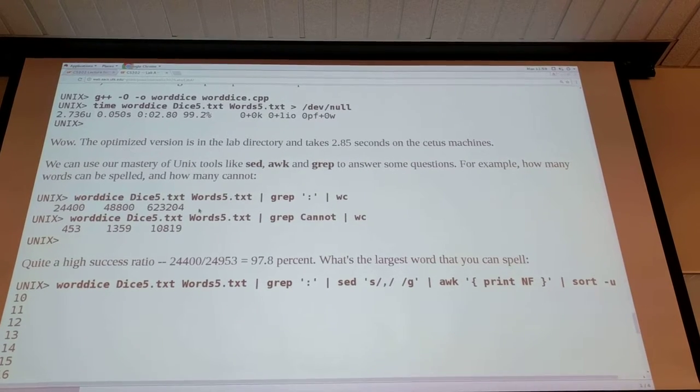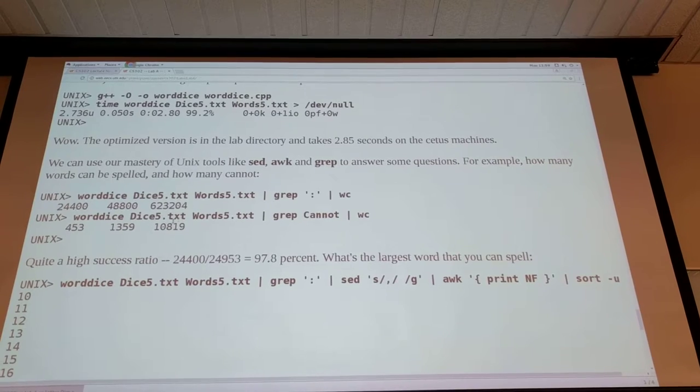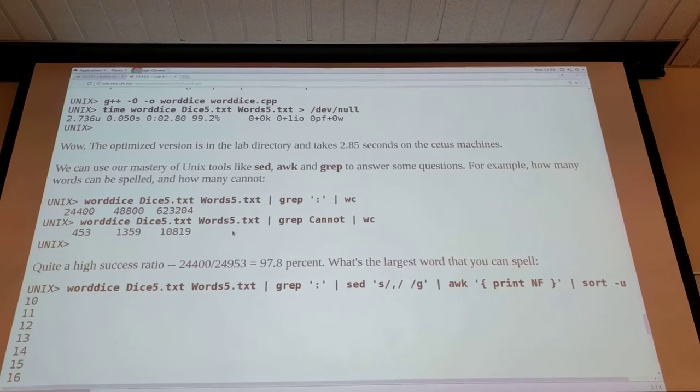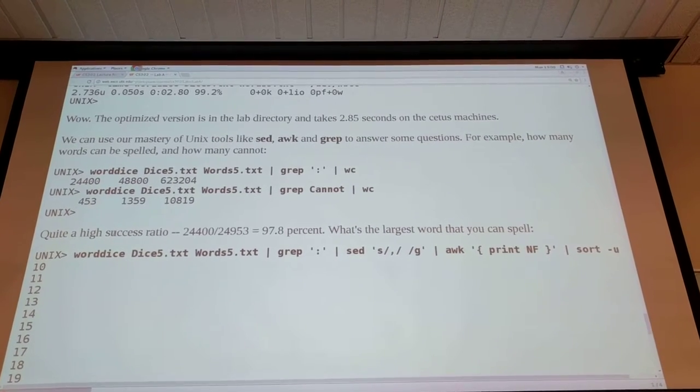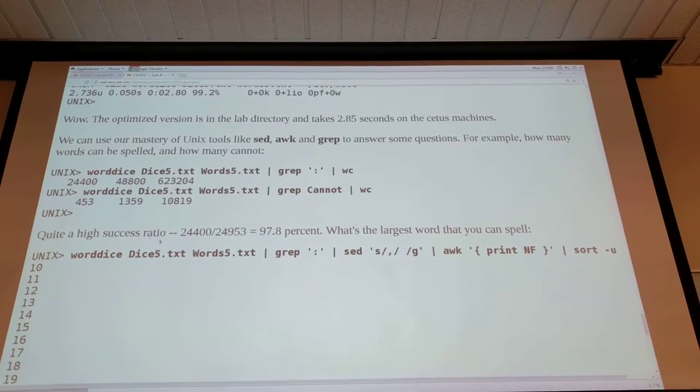For instance, you can answer the question how many of the words that are in the words file could be matched, could be spelled with the dice. And then you can do which ones cannot be spelled. And then you can calculate the success ratio given word dice to being able to spell the words in the dictionary.